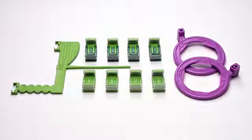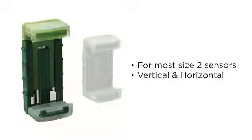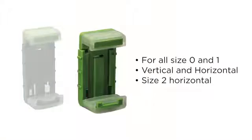Begin by selecting a holder that works best for your sensor size. The dark and light green holder is for most size 2 sensors in the vertical position and all in the horizontal. The solid green is for smaller sizes, generally all size 0 and 1 sensors in both vertical and horizontal positions, and size 2 sensors in the horizontal position.